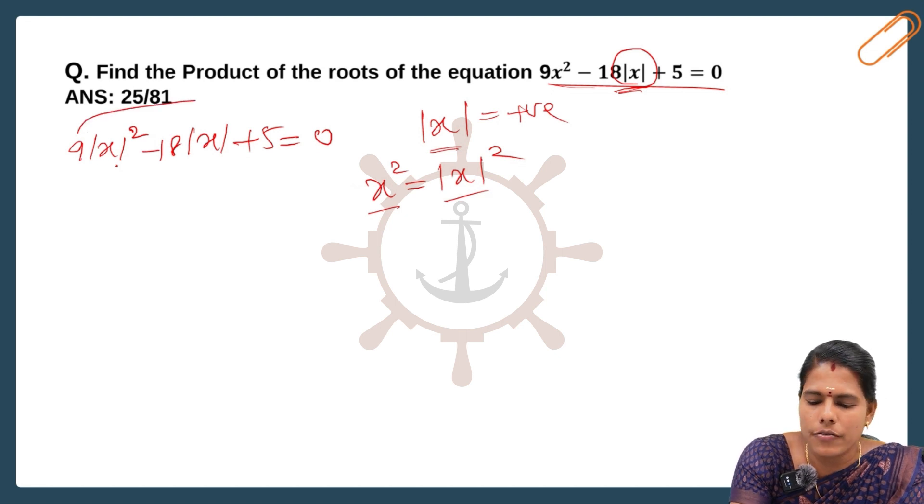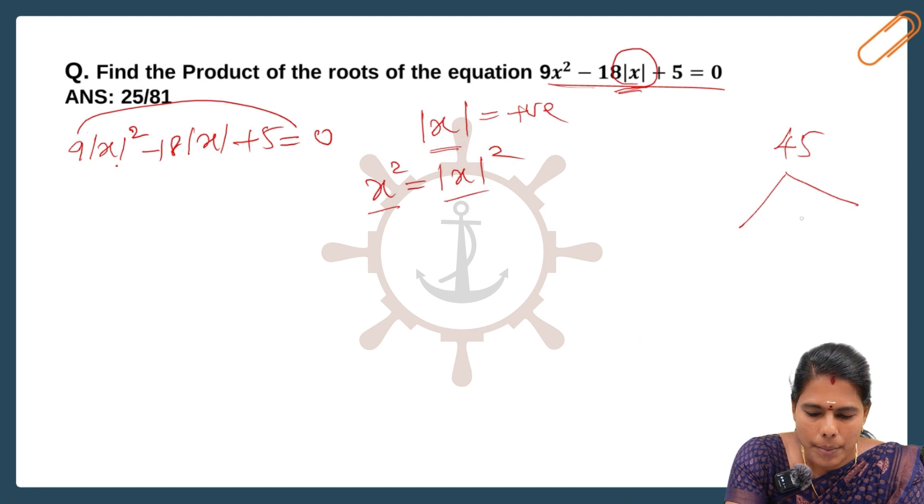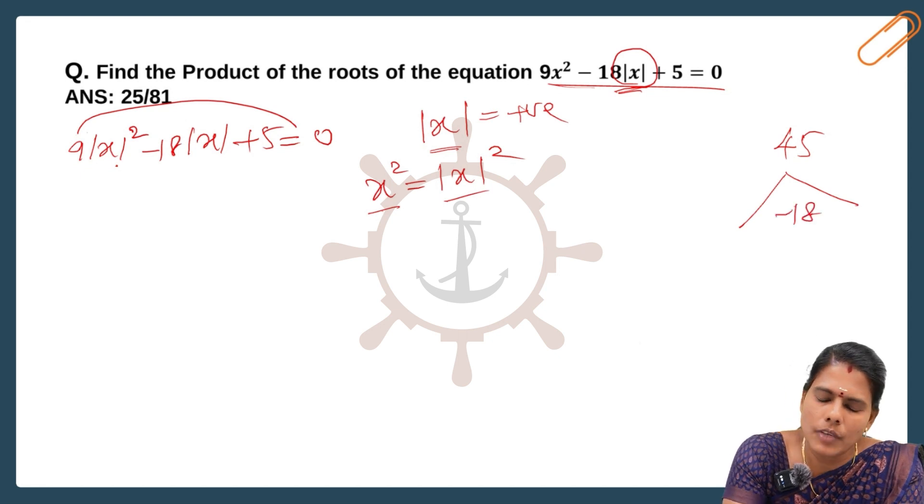9 times 5 is 45, so the product is 45 and the sum is -18. What are all the factors?